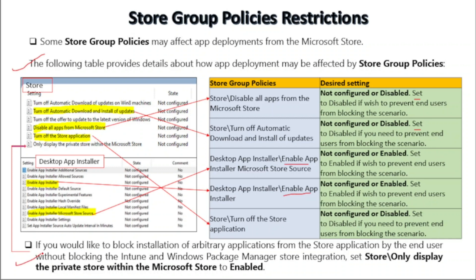If you would like to block installation of arbitrary applications from the store by the end user without blocking the Intune and Windows Package Manager store integration, you have to set the store group policy called 'Only display the private store within the Microsoft Store' to Enabled.